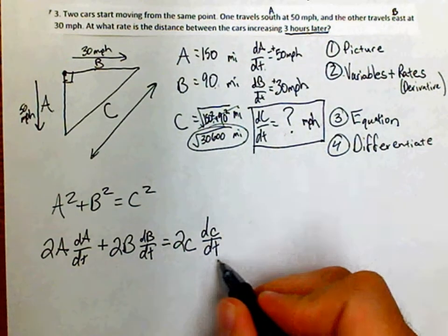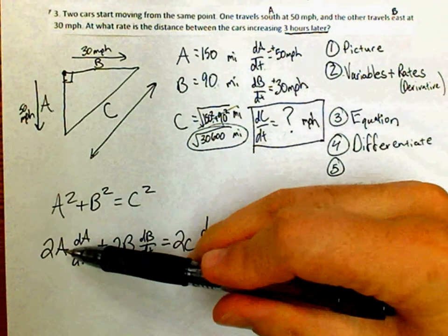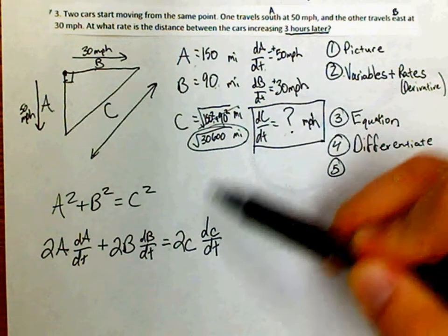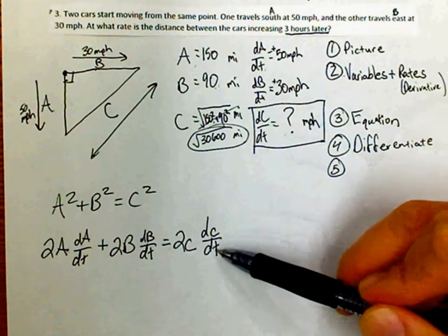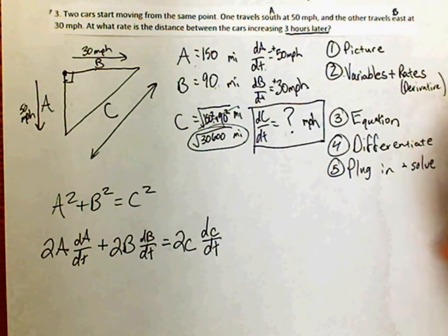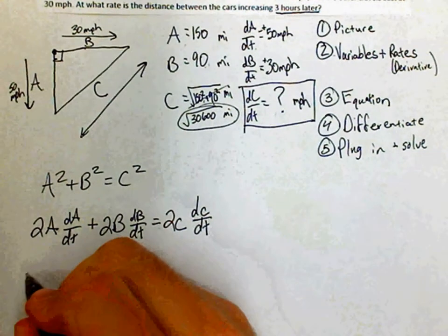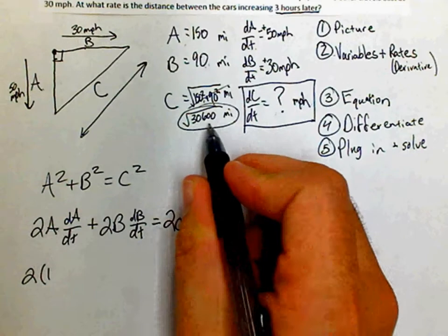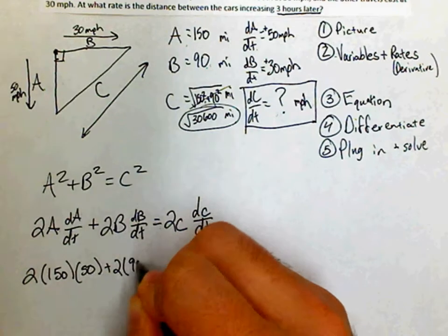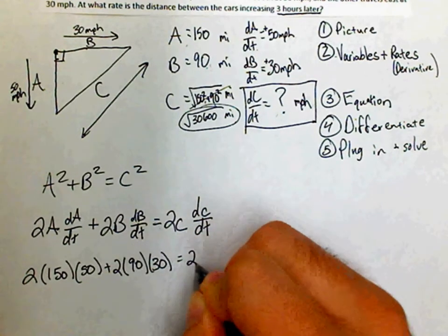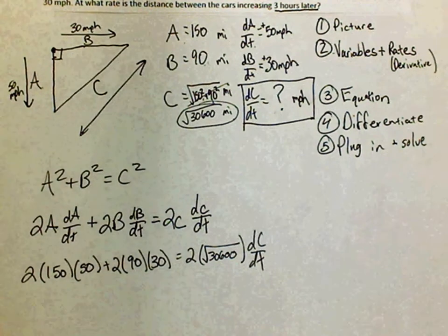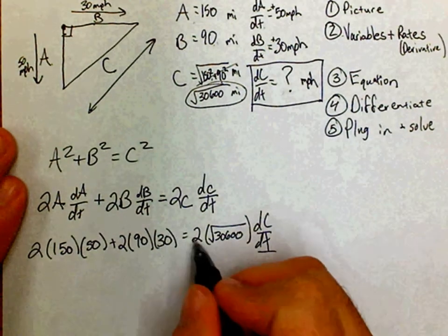This looks a little complicated, but the good news is I know a, da/dt, b, db/dt, and c. The only unknown is dc/dt — that's all I'm looking for. Let's plug everything in: 2(150)(50) + 2(90)(30) = 2(√30,600)(dc/dt). Now divide both sides by 2√30,600 to solve for dc/dt.